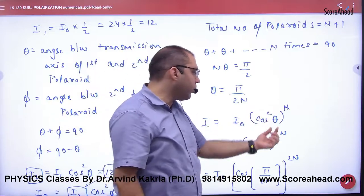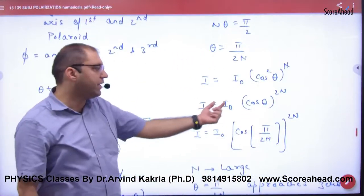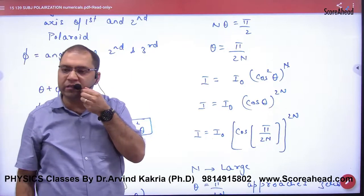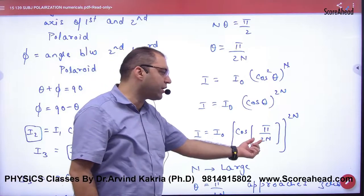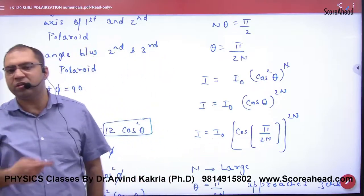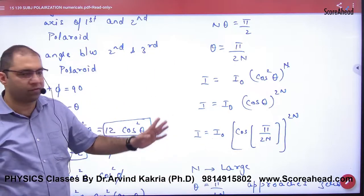So the intensity is I₀/2 times (cos θ)^N. And what is theta? The theta is the angle between adjacent Polaroids, which we have taken as π/2N. So this is the value of intensity in this case.